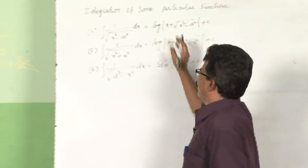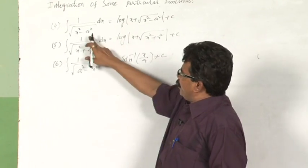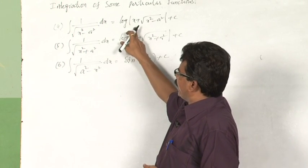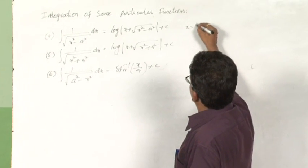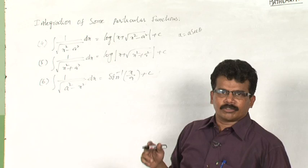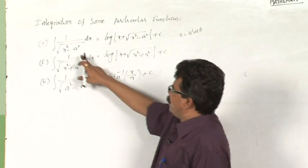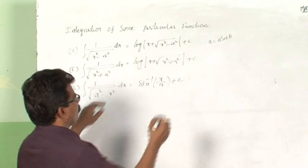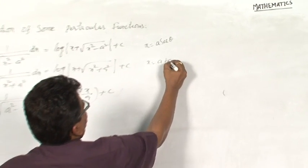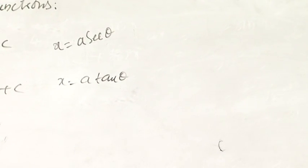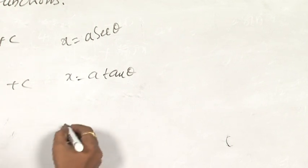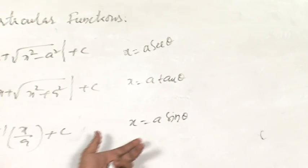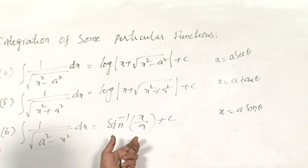How to prove all these formulas? We have to take suitable trigonometric functions. Here we take x equal to a secant theta. One more option is x equal to cosecant theta, but the simplest form is x equal to a secant theta. To find the integration of 1 by root of x square plus a square, the suitable substitution is x equal to a tan theta. For the third type, the suitable function is x equal to a sin theta — either sin theta or cos theta, but the simplest form is a sin theta.